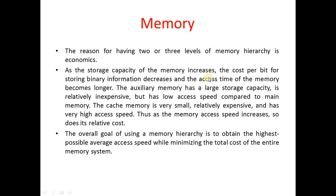As storage capacity of memory increases, the cost per bit for storing information decreases, but access time becomes longer. Auxiliary memory has large storage capacity, is relatively inexpensive, but has low access speed compared to main memory. Cache memory is very small, relatively expensive, and has very high access speed. Thus, as memory access speed increases, so does its relative cost. The goal of a memory hierarchy is to obtain the highest possible average access speed while minimizing the total cost of the entire memory system.